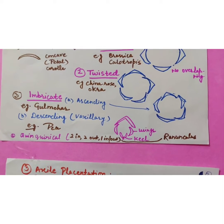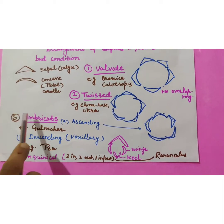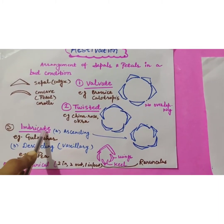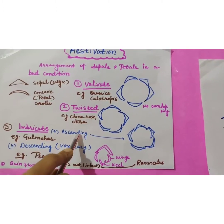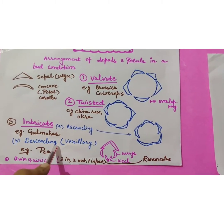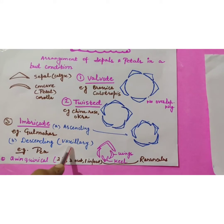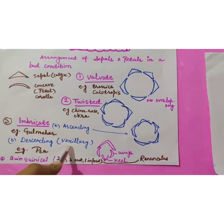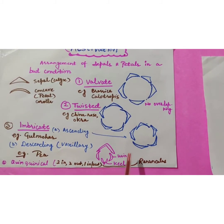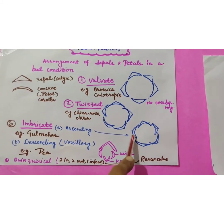Third type is imbricate aestivation. Imbricate aestivation is of two types. Ascending imbricate aestivation, descending imbricate aestivation. Another name for descending is vexillary aestivation. In ascending, if you see the arrangement of the sepals, what type of arrangement they have.